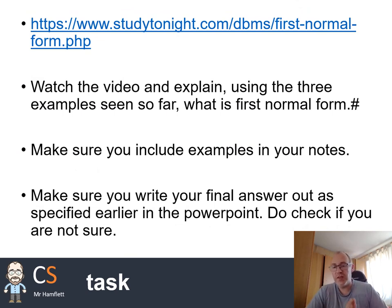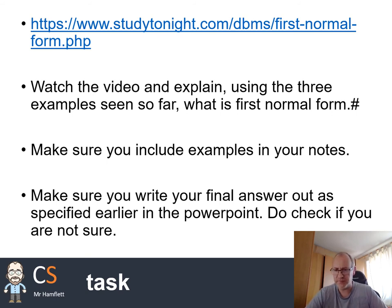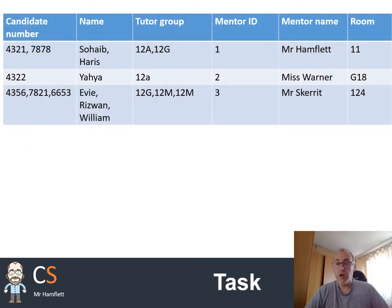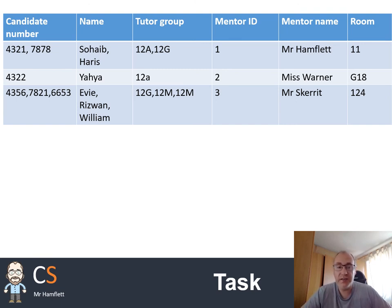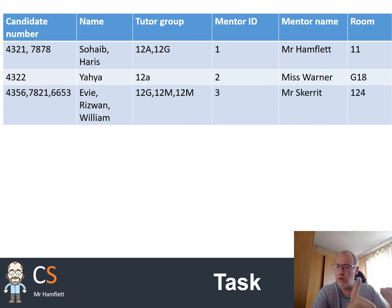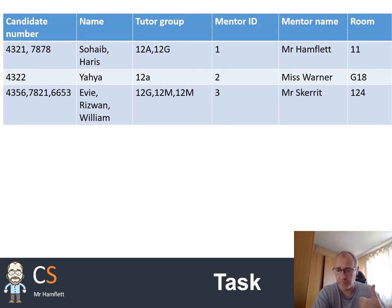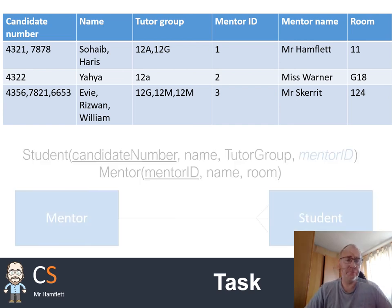It's really important that you understand first normal form and see examples of it. There are plenty on the internet — I've highlighted one website that's easy to digest. Here's another task to try: this database is not in first normal form. First, can you spot where the problem is? Then figure out what tables need to be introduced, whether you need any new primary keys, what attributes go in which table, and where the foreign key goes.